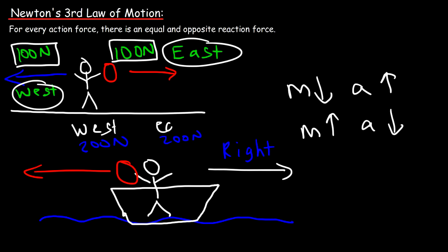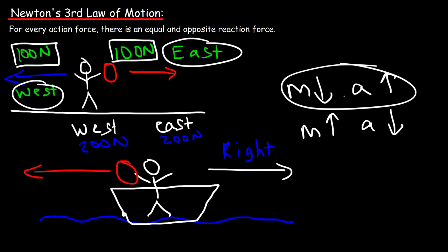Because the mass is different, the acceleration will be different. The ball, which is much lighter than you, will have a larger acceleration. You combined with the boat have a much larger mass, so the acceleration you experience is smaller — the boat and you won't move much because of the low acceleration.